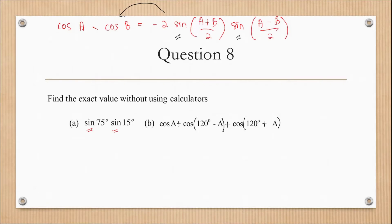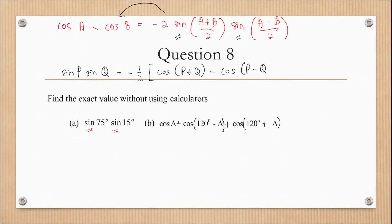I'm going to derive a new equation from here. The new equation is: sine P · sine Q equals negative one-half times [cos(P+Q) minus cos(P−Q)]. You can derive this new equation directly from the factor formula.